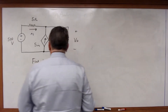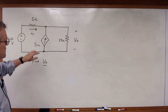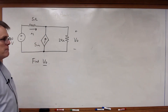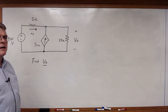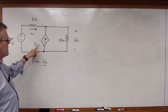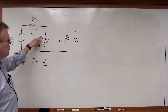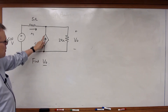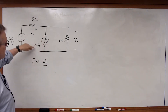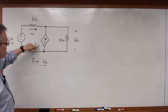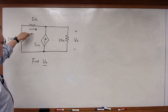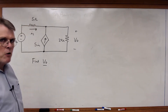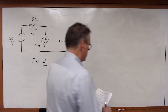I'm making things a bit more interesting by adding a dependent source. This is a current-controlled current source, and the current flowing up is equal to 5 times I1, which is controlled by the current flowing through the 5-ohm resistor.